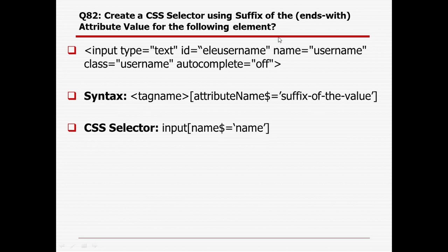CSS selector using suffix — 'ends with': suppose 'username' where the 'name' part is fixed but the 'user' part sometimes changes to user1, user2, user3. The syntax is: tag name, [attribute$='suffix_value']. Tag name is 'input', attribute is 'name', using '$=' and the suffix part, which is the last fixed part of the value.